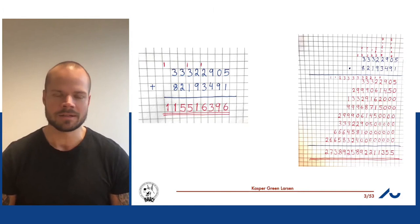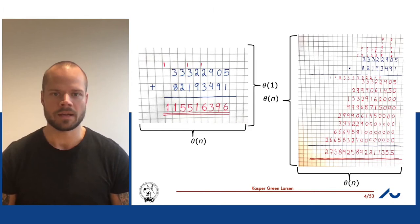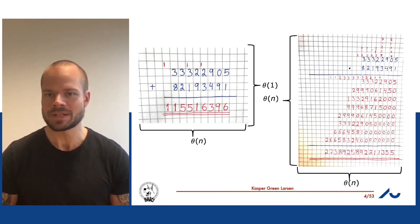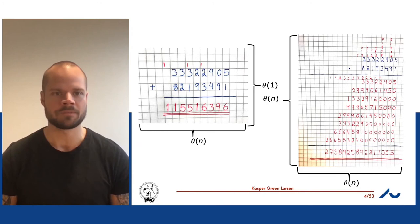You could ask yourself: is multiplication a harder problem than addition? At least it seems that way. Let's analyze this from an algorithmic point of view. Say the numbers have n digits. When adding two numbers, we use a constant number of lines on the sheet of paper — two lines to write the numbers, one line for the result, and maybe one for carries — so a constant number of lines independent of n. The number of columns is going to be Θ(n).